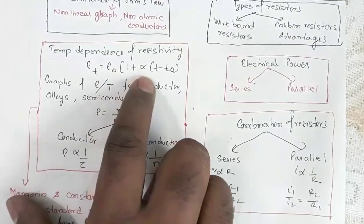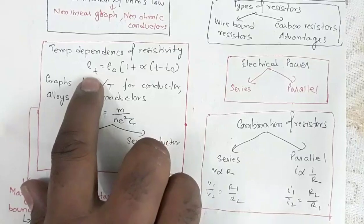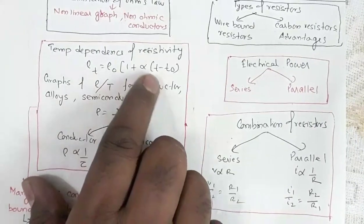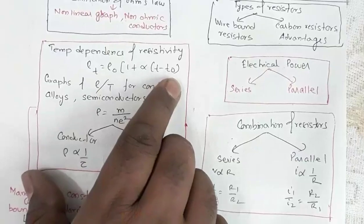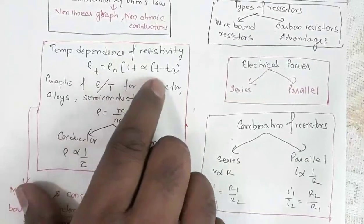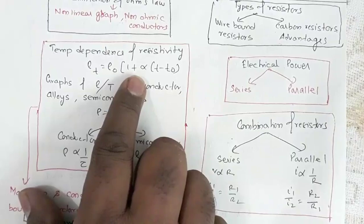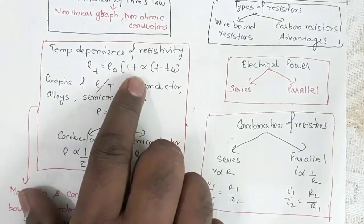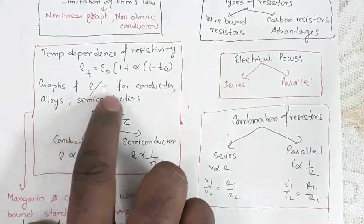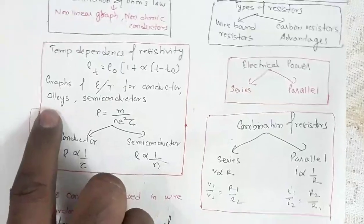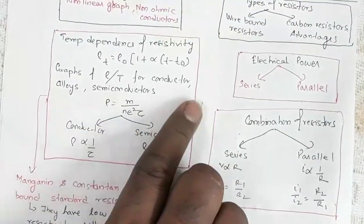Temperature dependence of resistivity: ρ_T = ρ₀(1 + α(T - T₀)), where ρ_T is resistivity at temperature T, ρ₀ is resistivity at temperature T₀, and α is the temperature coefficient of resistivity. The graph between resistivity and temperature for conductors, alloys, nichrome, and semiconductors is often asked.